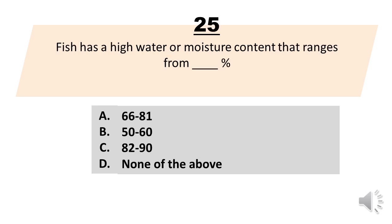Fish has a high water or moisture content that ranges from blank percent. A. 66-81. B. 50-60. C. 82-90. D. None of the above.